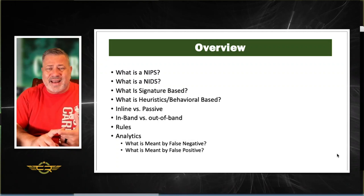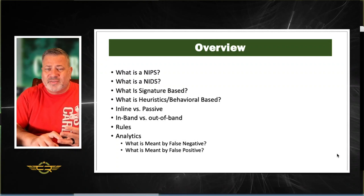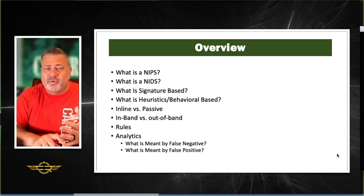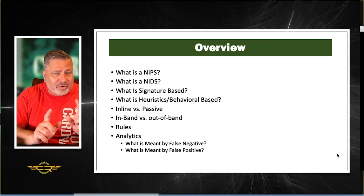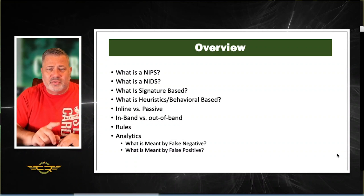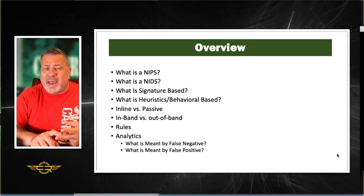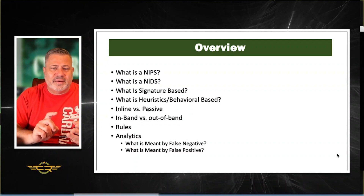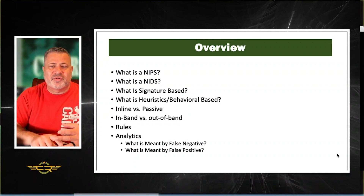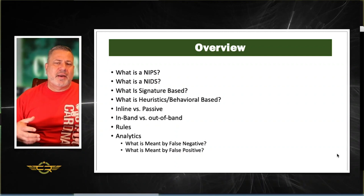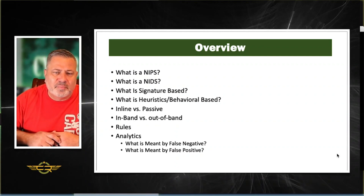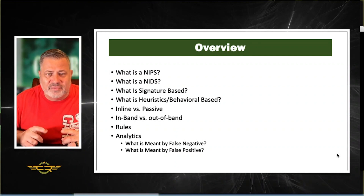What's a NIPS? What's a NIDS? What's signature-based and what is heuristics or behavioral-based — there's a difference between the two. What do we know about inline versus passive? What is in-band versus out-of-band? What do we know about rules? And then what about analytics, false positives and false negatives?